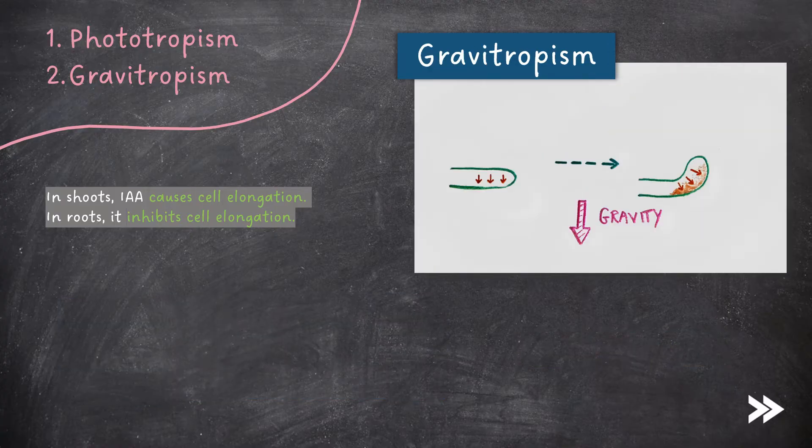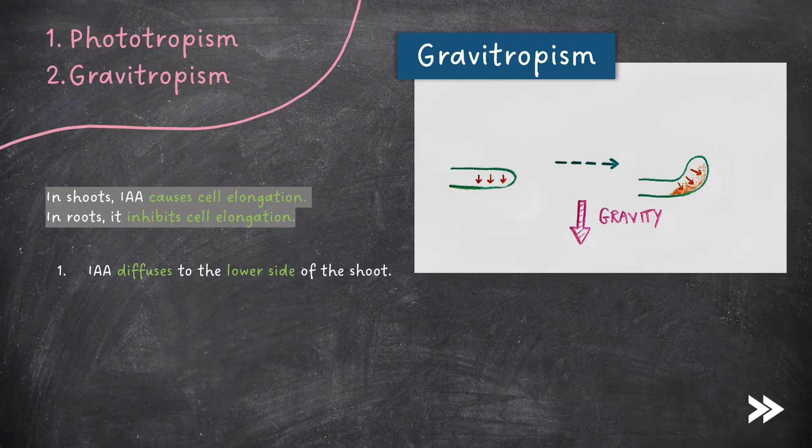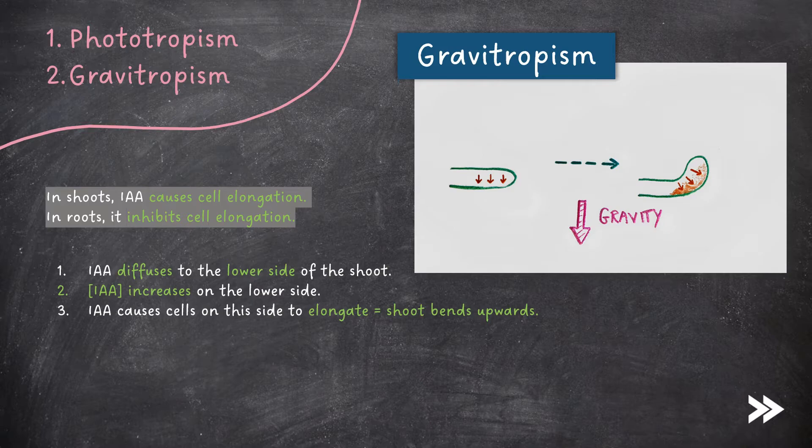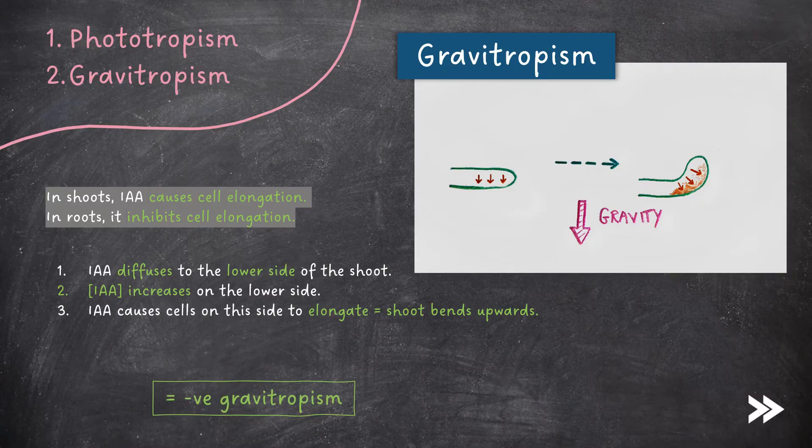Next, we have gravitropism. First, IAA diffuses to the lower side of the shoot. The concentration of IAA therefore increases on this lower side. IAA causes cells on this side to elongate, which causes the shoot to bend upwards, and this is known as negative gravitropism, i.e. we're working against the force of gravity.